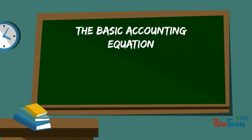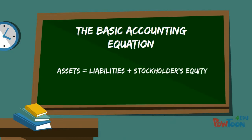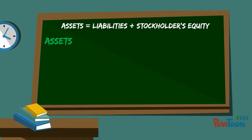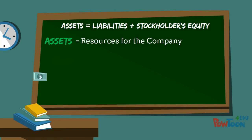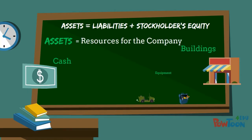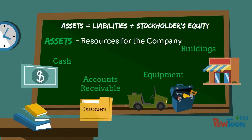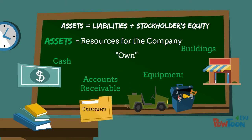The basic accounting equation balances assets against liabilities and stockholders' equity. Assets are resources for a company — things like cash, buildings, equipment, and also accounts receivable, which is money owed to the company by its customers. Some people like to think of these as things you own in the company.